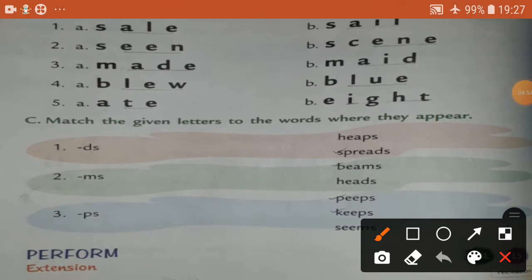See, number one, match the given letters to the words where they appear. See children, number one D-S, D-S. Find two words here. So see, D-S spreads, okay. Spreads, last sound, see last letter D-S, okay.